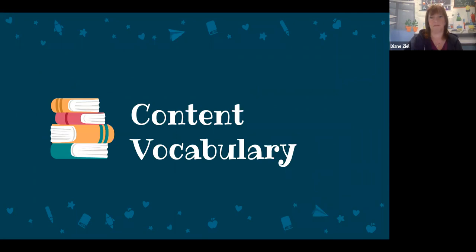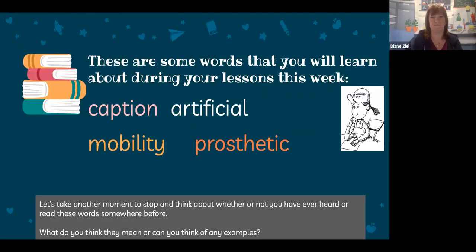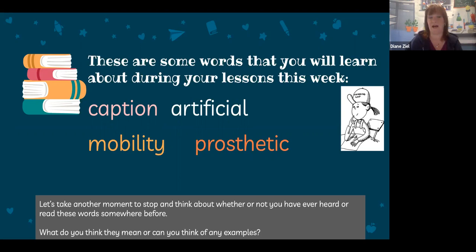Now let's take a look at some of the important content words for this week's lessons. These are words you will come across during your lessons this week: 'caption,' 'artificial,' 'mobility,' and 'prosthetic.' Before we move on to explore these words, stop and take a moment to think about whether you have or have not read or heard these words somewhere before.